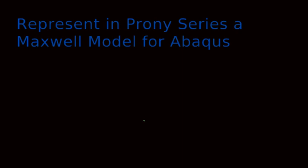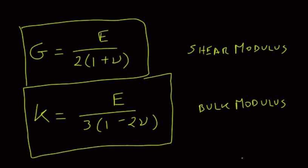To understand that, let's remember some relations between elastic properties. You must remember these relationships from your solid mechanics class. G, which is the shear modulus, is related with the elastic modulus and the Poisson ratio. Also the bulk modulus is related with the elastic modulus and the Poisson ratio. This is what you need to remember before we jump into calculating the Prony series for a single Maxwell model.